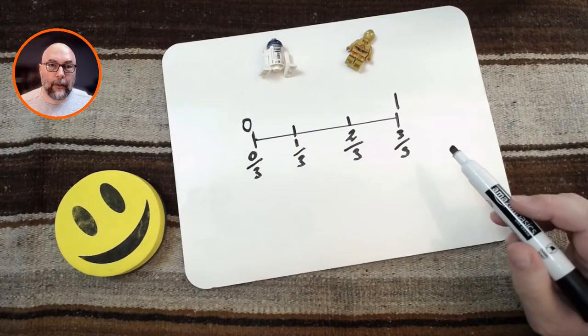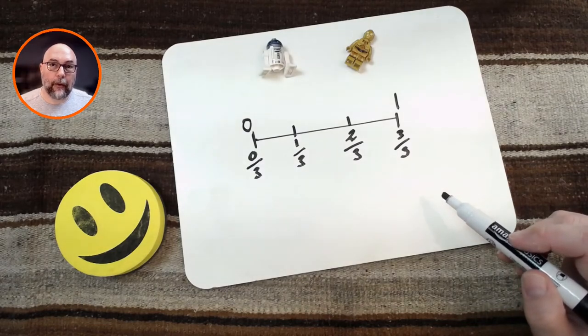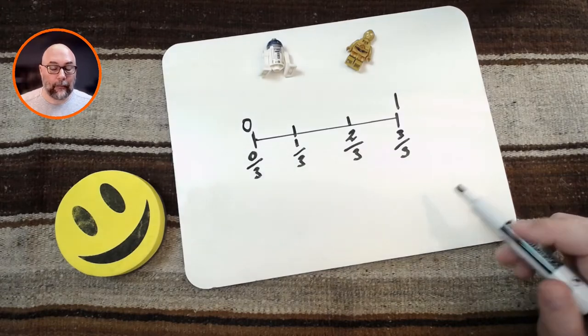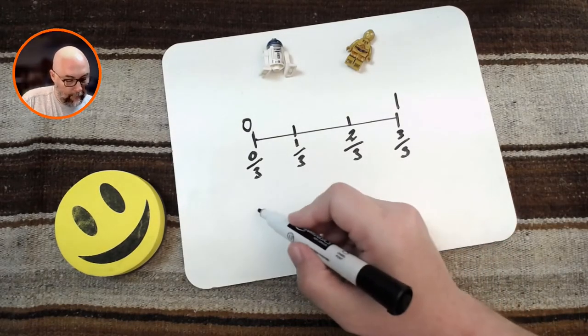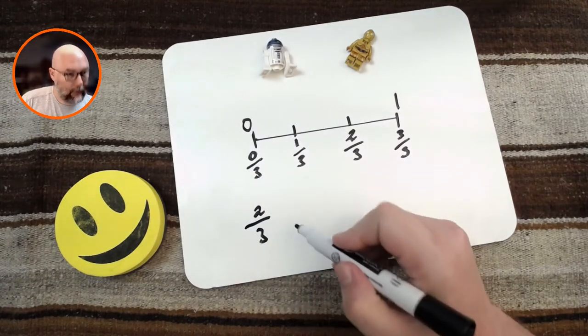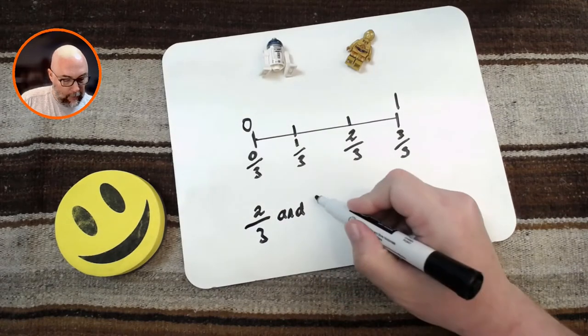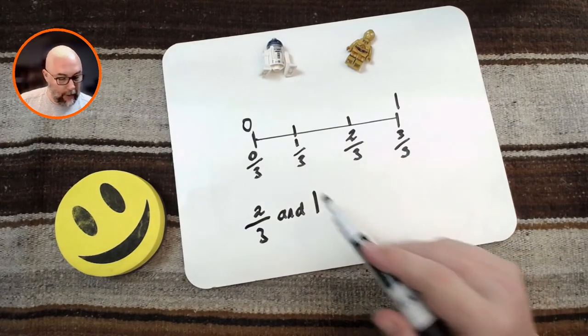We can use this number line to help us know if numbers on a fraction are the same as numbers in a whole. For example, is the number 2 thirds and the number 1, are they equal?